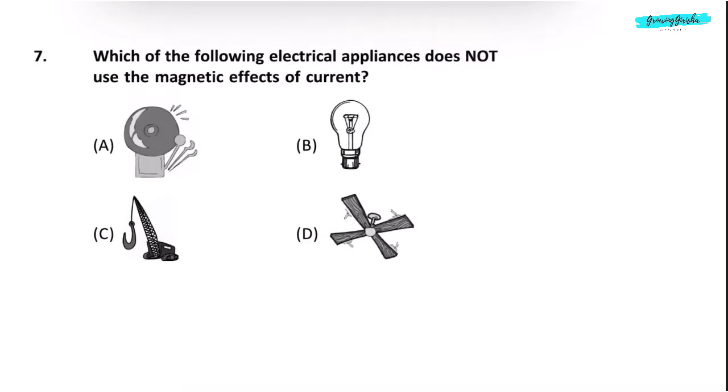Question 7. Which of the following electrical appliances does not use the magnetic effects of current? Electrical appliances shown in options A, C, and D use the magnetic effects of current. An electric bulb converts the electric energy to light energy. So the correct answer is option B, electric bulb.